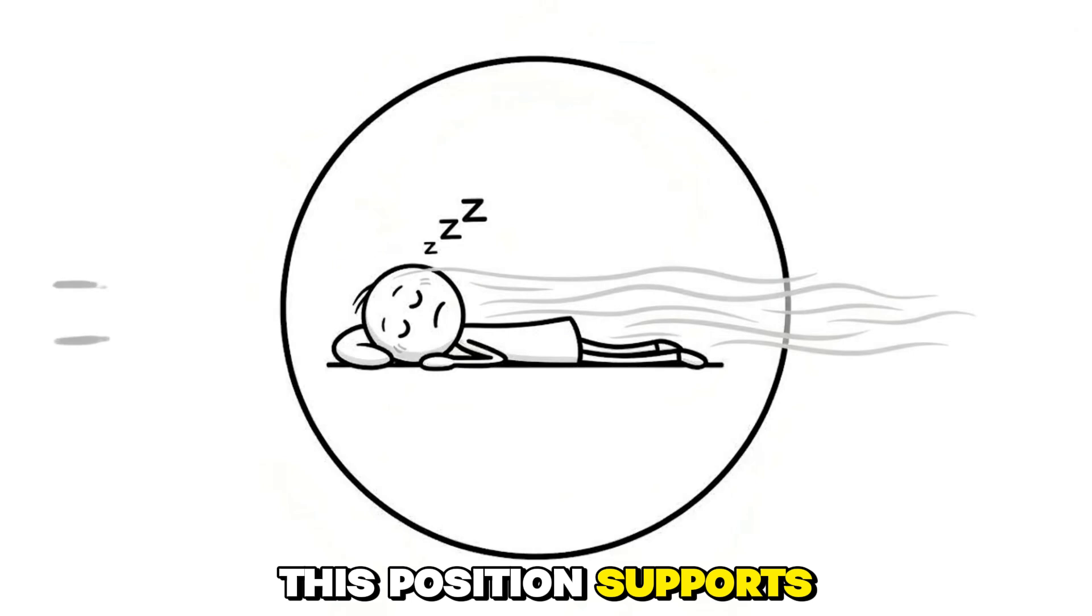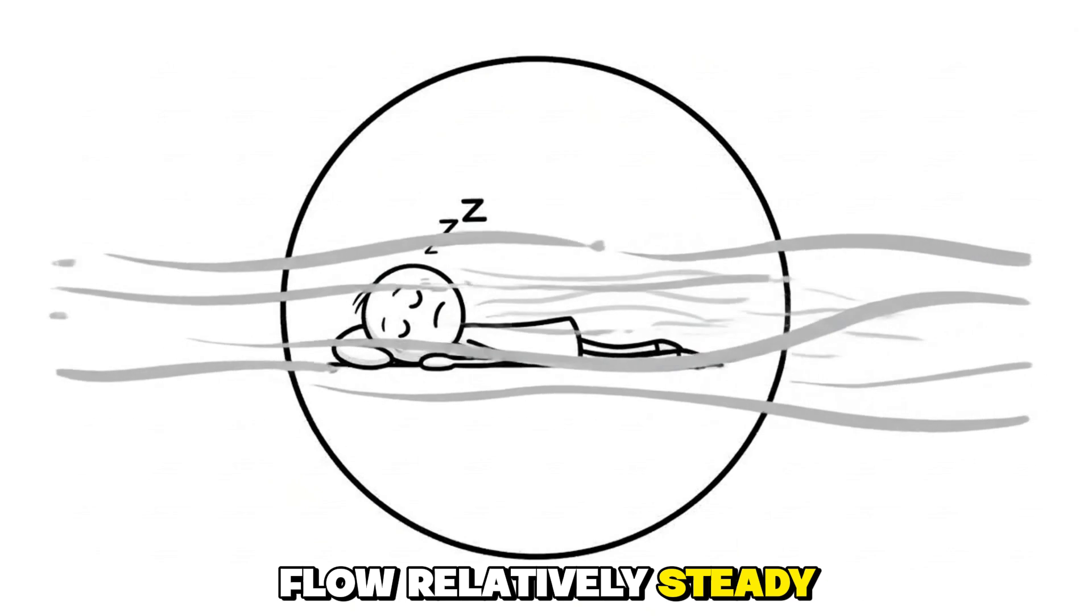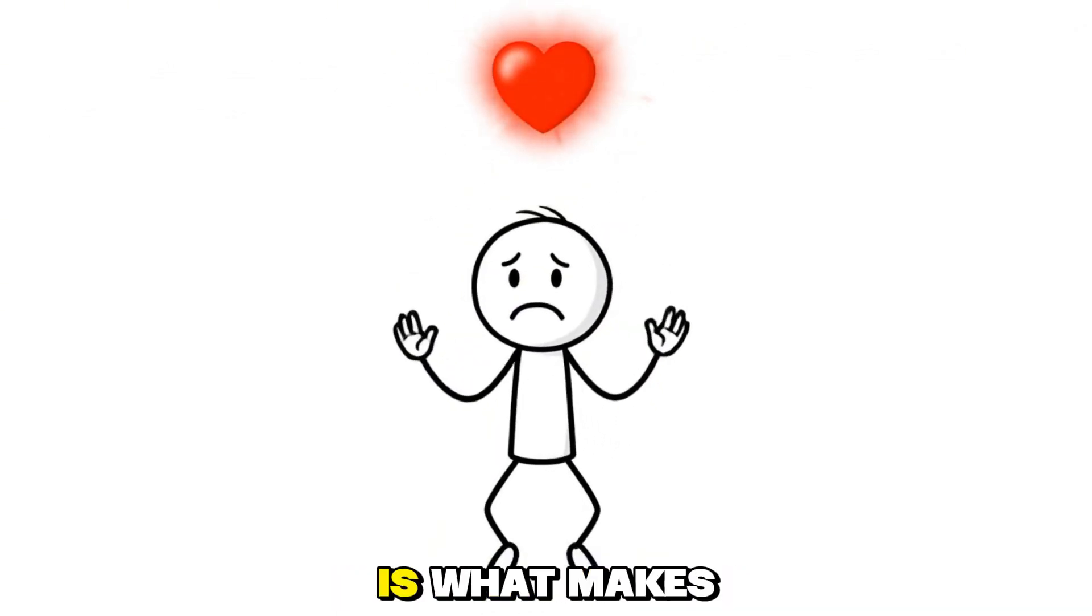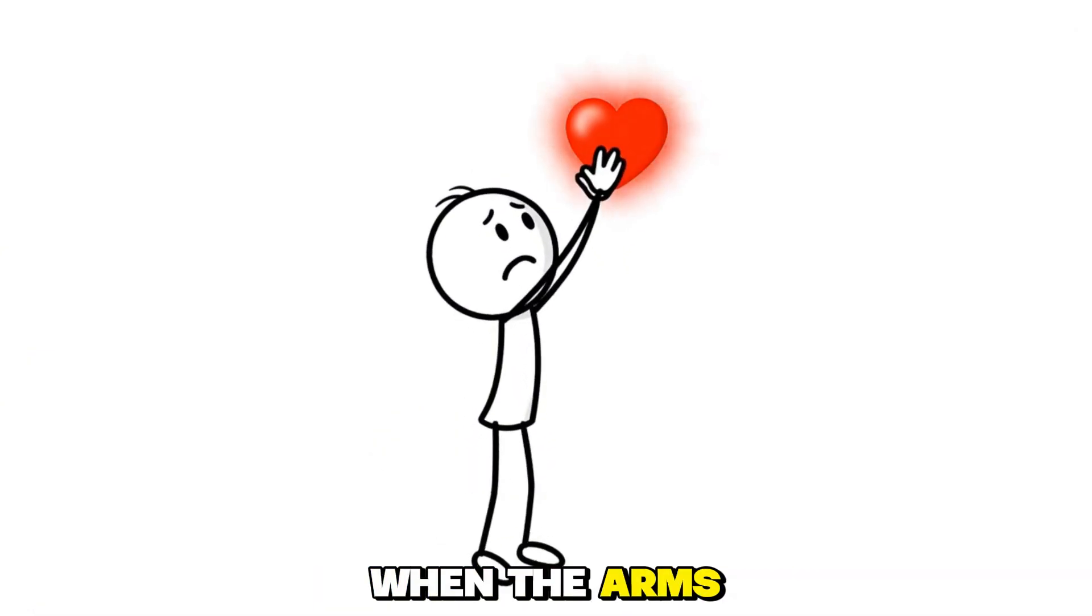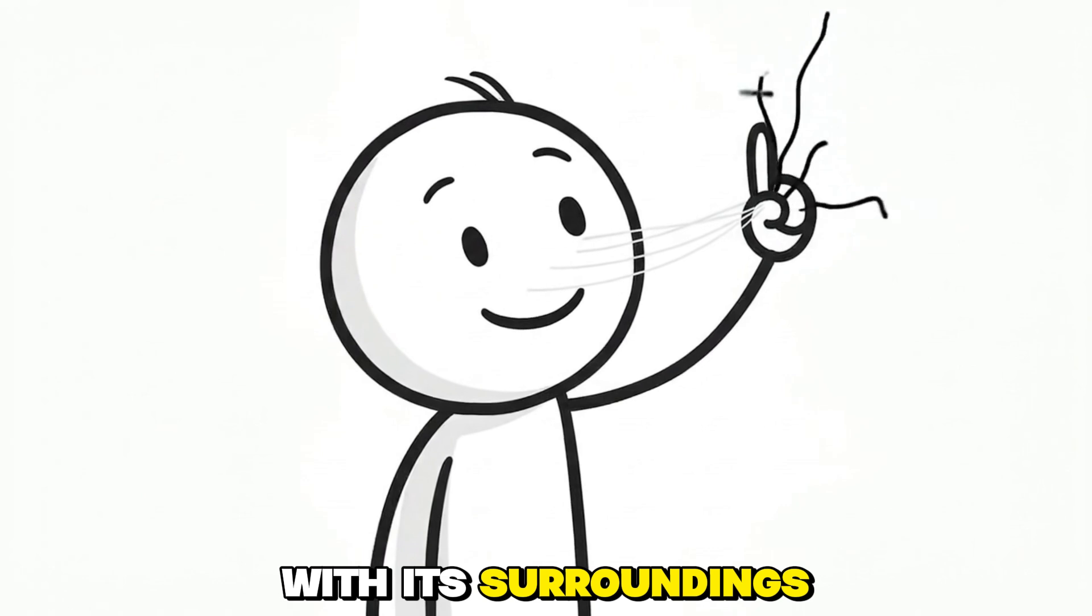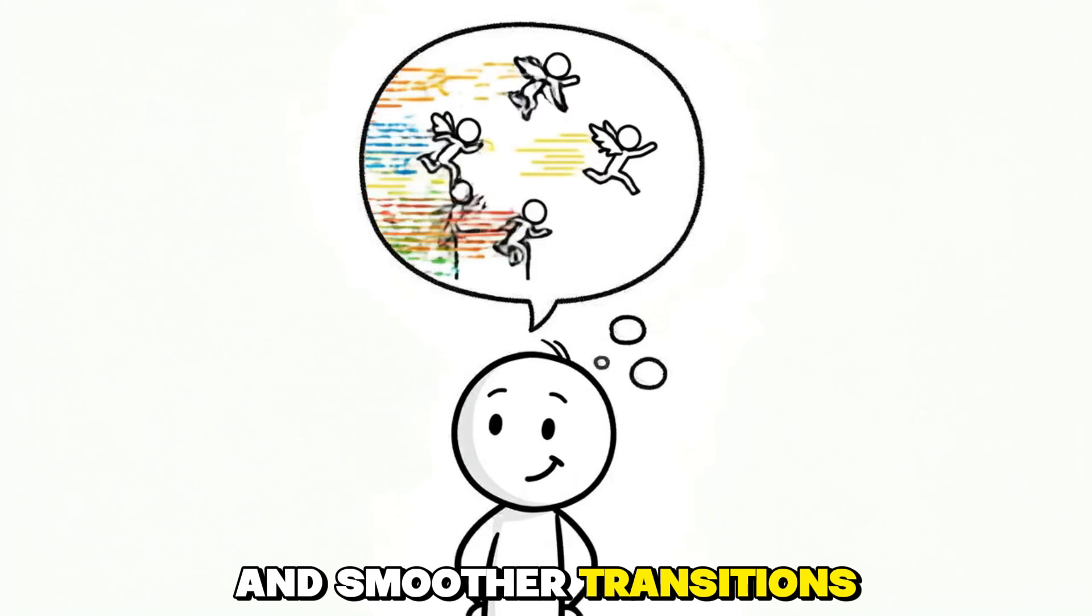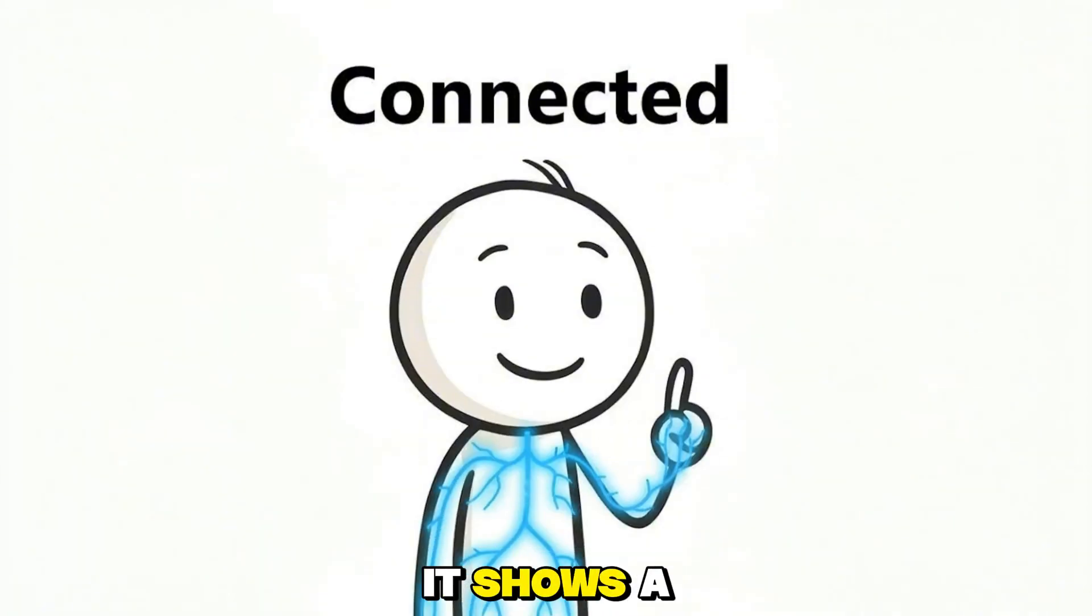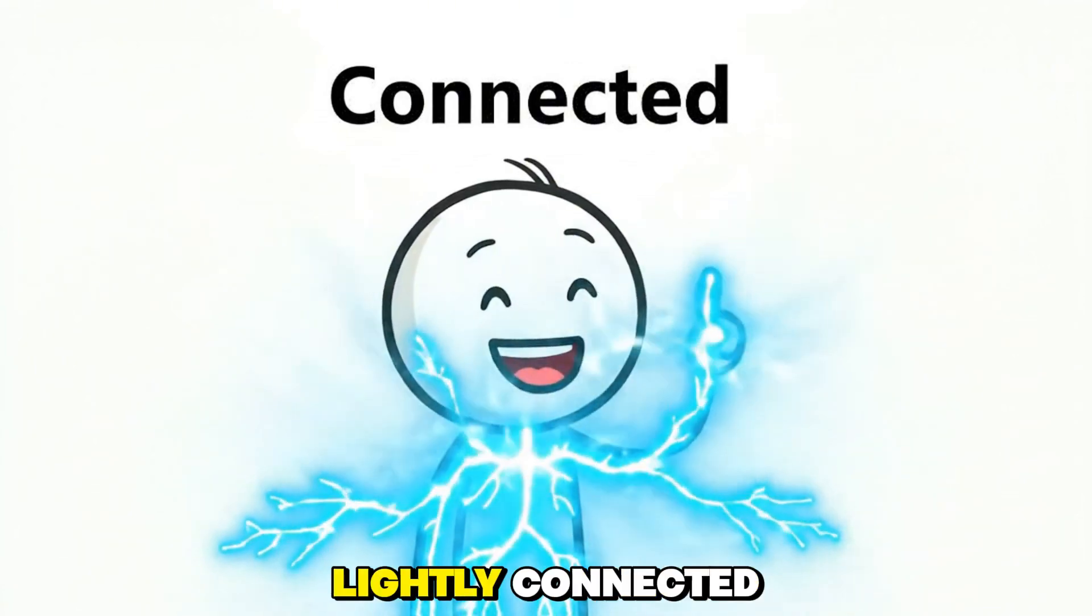This position supports the spine, reduces lung pressure, and keeps air flow relatively steady. But the emotional layer is what makes this posture especially interesting to observe. When the arms reach outward, the body stays relaxed yet quietly engaged with its surroundings. People who sleep this way often experience vivid dreams and smoother transitions into REM sleep. It shows a nervous system that can rest deeply while still remaining lightly connected.